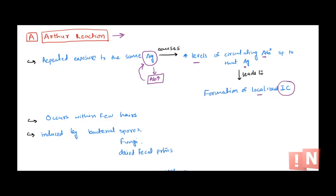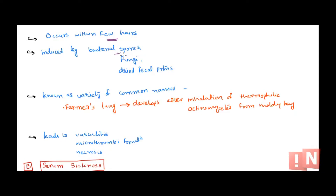The Arthus reaction develops within a few hours of exposure, because antibodies are already present from prior sensitization. It can be induced by bacterial spores, fungi, and dried fecal protein. Those at risk are people repeatedly exposed to a particular antigen.